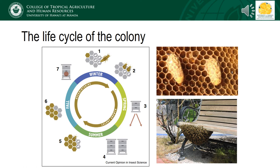In Hawaii, where we don't have true winter, egg production does occur year-round, but evidence suggests it slows during the winter. This makes sense, as our honeybee species, Apis mellifera, is native to Europe and may possess an internal clock telling them it's winter, even though the palms are still swaying.